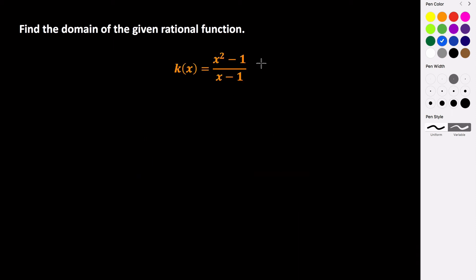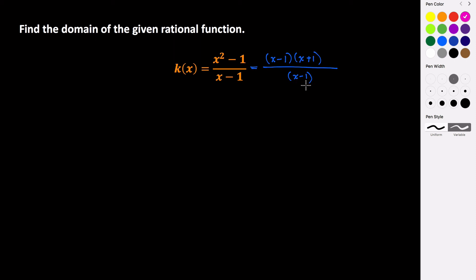Let's look at one more. This last one is factorable. Looking at the numerator, it factors to be x minus 1 times x plus 1, and the denominator is just x minus 1. If you were trying to write this in simplest terms, we see that we can cancel the x minus 1 factors — so this rational function will act like the linear equation x plus 1. But we have to keep the original definition in mind. Because our original function is defined as x squared minus 1 divided by x minus 1, we still need to figure out what makes the denominator 0, and it still is not allowed to equal 0. So we still have a domain restriction of x cannot equal 1.